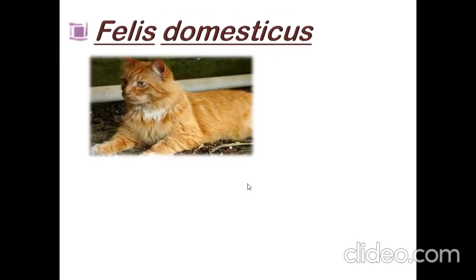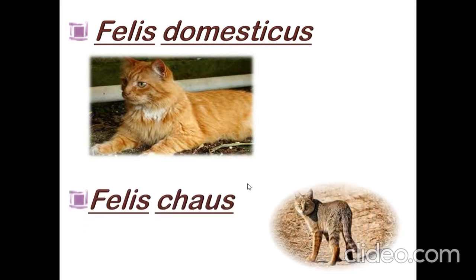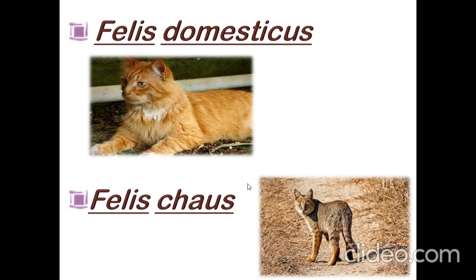Felis domesticus is our domesticated house cat — we can use them as a pet. But Felis chaus is the jungle cat; we can't use them as a pet. He is the jungle cat.